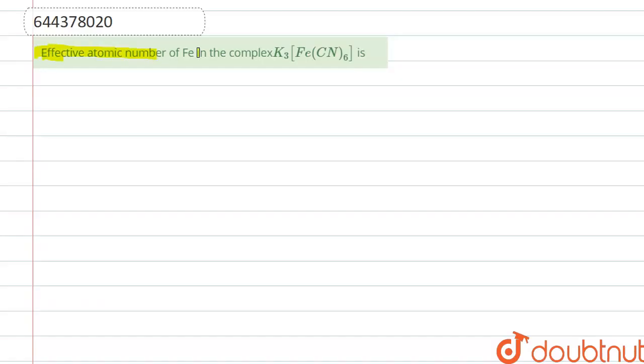Effective atomic number of Fe in the complex K3[Fe(CN)6]. So here the complex compound is given